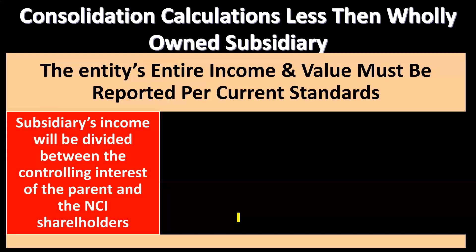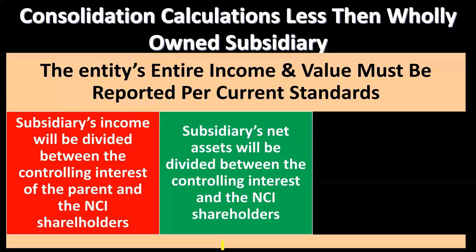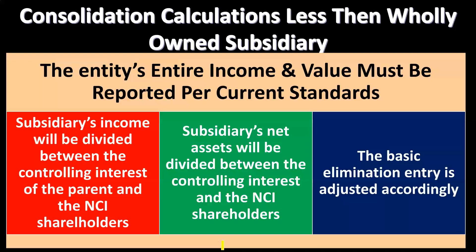The subsidiary's income will be divided between the controlling interest — the parent — and the non-controlling interest shareholders. We want to show income fully consolidated at 100%, and then also show the non-controlling interest portion within it. Similarly, the subsidiary's net assets will be divided between the controlling interest and the non-controlling interest shareholders.